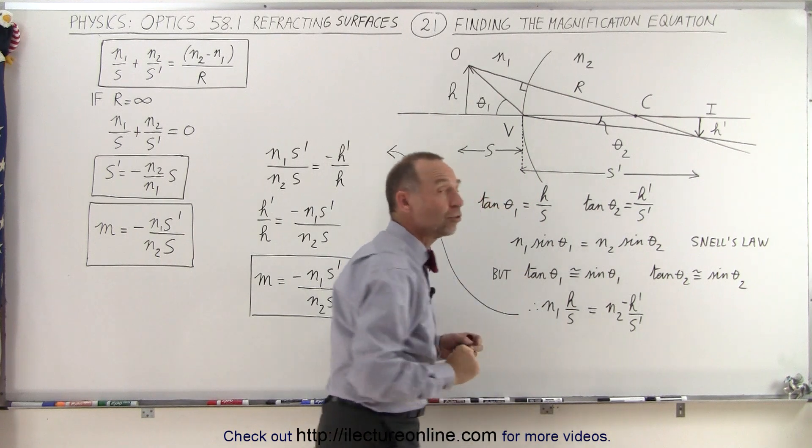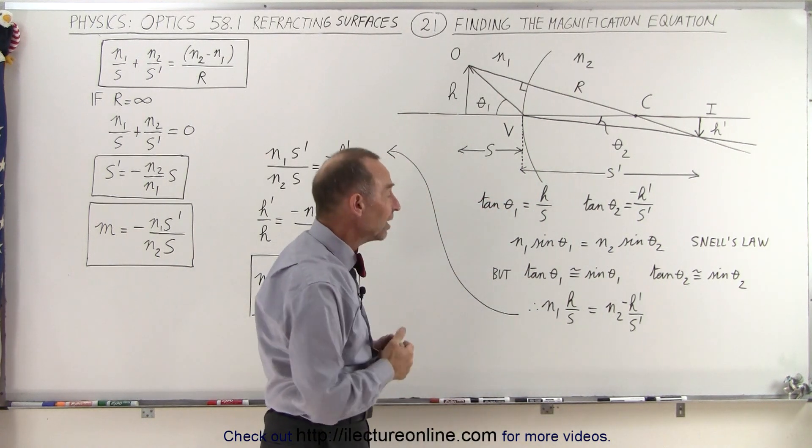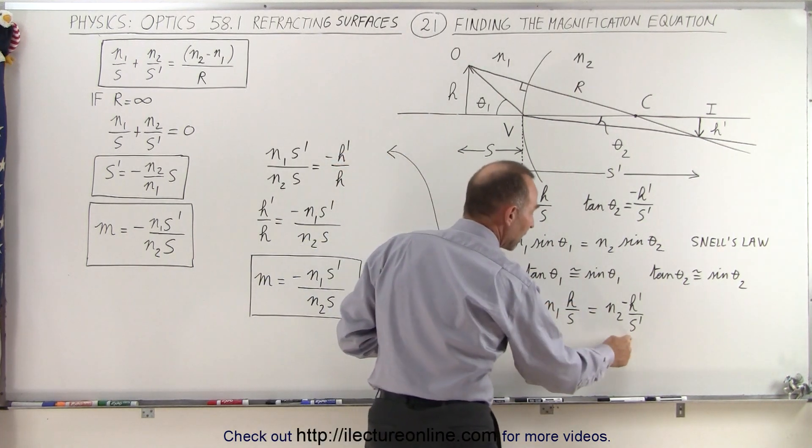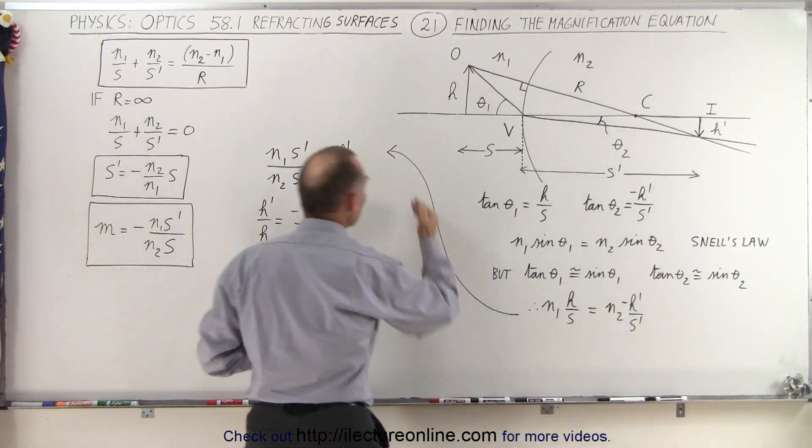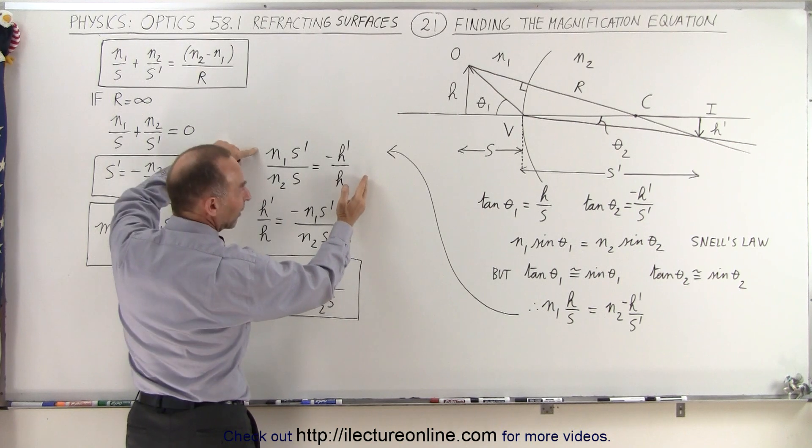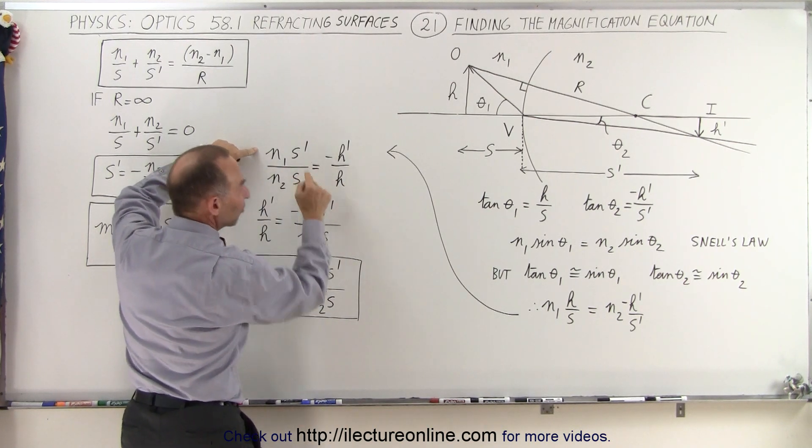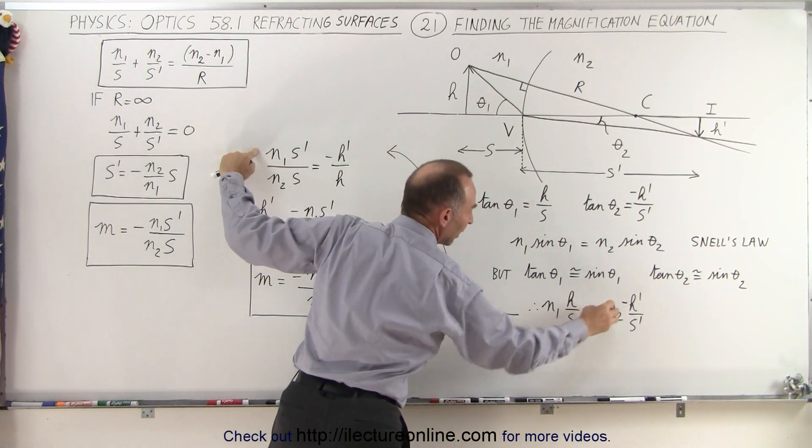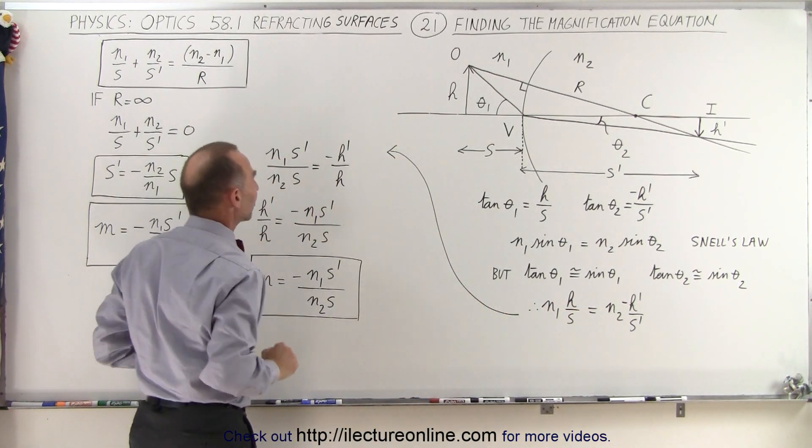So now that we have this equation, we're going to isolate H and H prime. We're going to move H down here, N2 down here, S prime up here, so when we come up here, we have minus H prime over H on the right side, on the left side we have N1 times S prime, and taking the N2 down here, we have N2 times S.